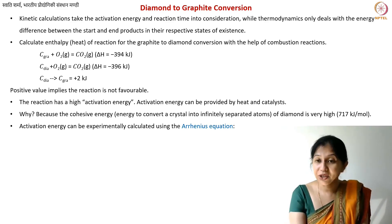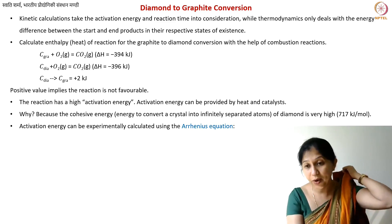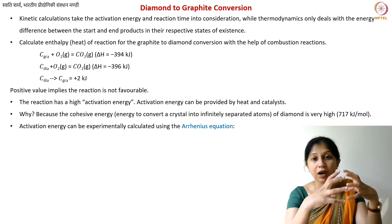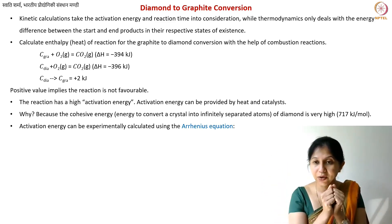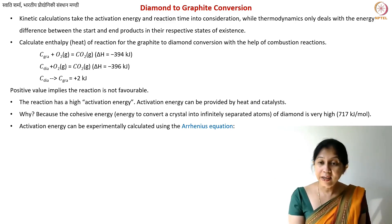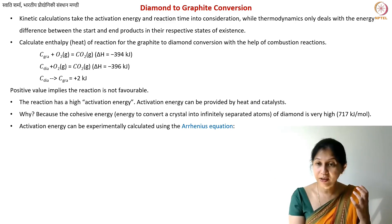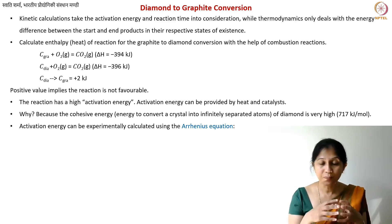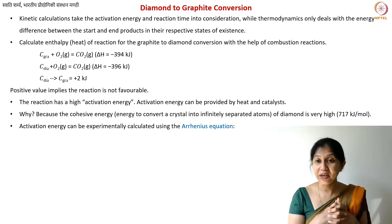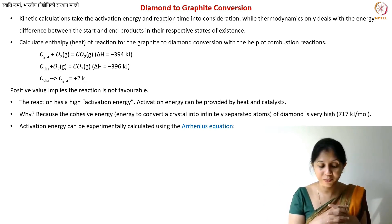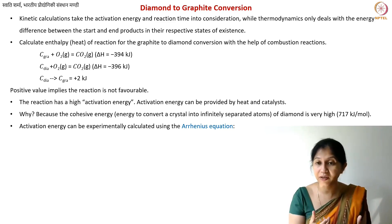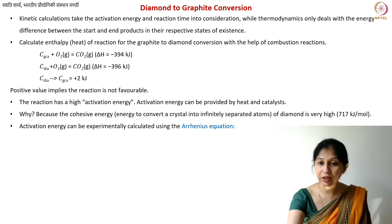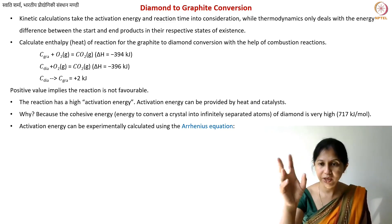The activation energy is required because you need to separate the diamond atoms and then bring them together to form a new structure. This energy for diamond is known as the cohesive energy — the energy required to take atoms apart to an infinite distance. For diamond that energy is pretty high: 717 kilojoules per mole. This physically means that taking atoms apart from diamond is not easy and requires a lot of energy, which is what we now call the activation energy.